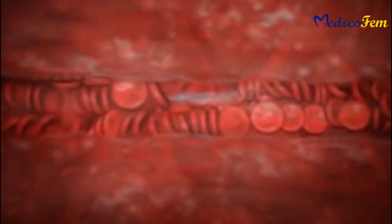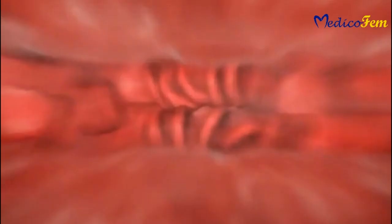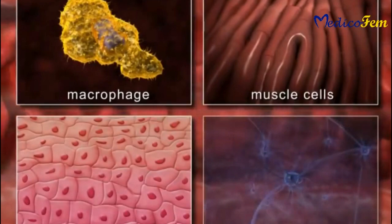After entry into the blood, the parasite invades reticuloendothelial cells, macrophages, and tissues like muscles, epithelial cells, and nervous tissues.